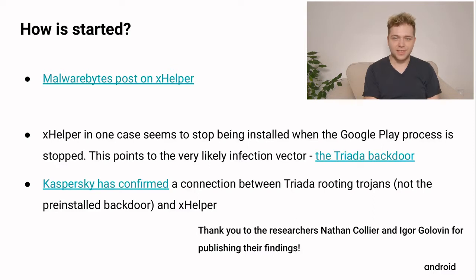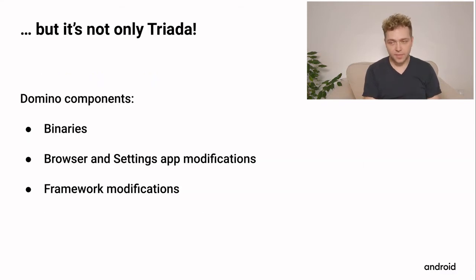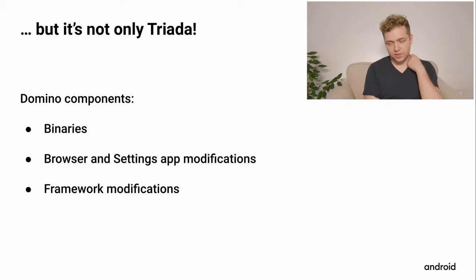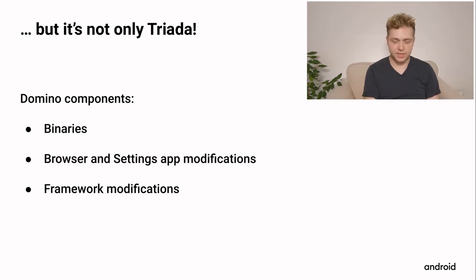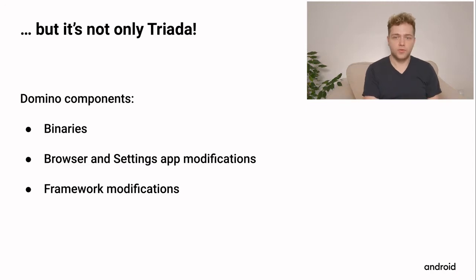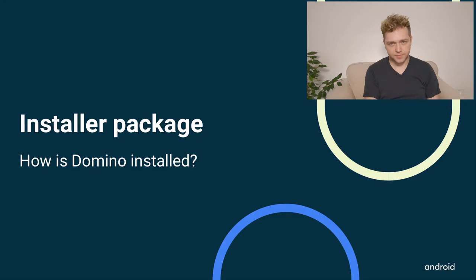But there is more. When I took a look at the devices that had Xhelper, I also examined the system images for those devices. The system images had a different kind of malware as well. Looking into the binaries and the whole system image, I found additional binaries on the system with privileged access. There were also modifications to the AOSP browser app and the settings app, plus modifications in the Android framework — all working together to download other apps and do ad fraud.